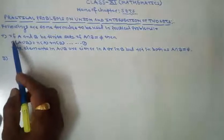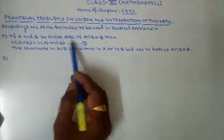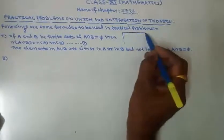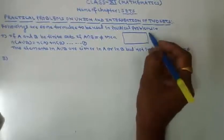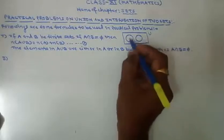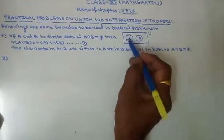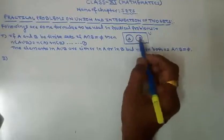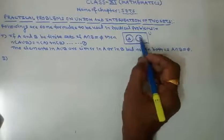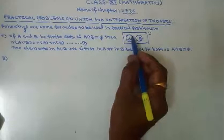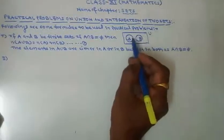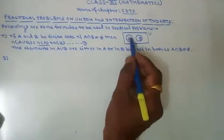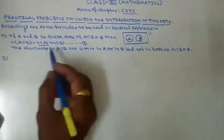Number one: if capital A and capital B are finite sets and A intersection B is equal to phi — that is, they do not have any common element, they are disjoint sets. So there is no element common to these sets. In that case, the number of elements in A union B will be equal to the number of elements in A plus the number of elements in B. This is the first result.